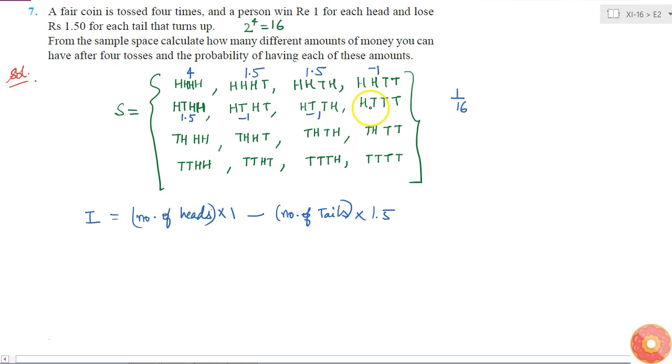Here I have 1 head and 3 tails. This means that I will win 1 rupee and I will lose 4.5 rupees, so I can tell that minus 3.5. This will be 1.5, minus 1, minus 1, minus 1, minus 3.5, minus 1, minus 3.5, minus 1, minus 3.5.